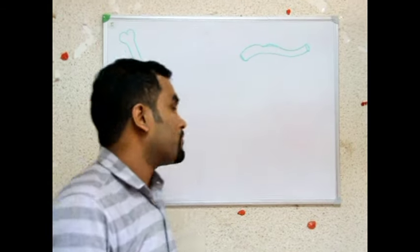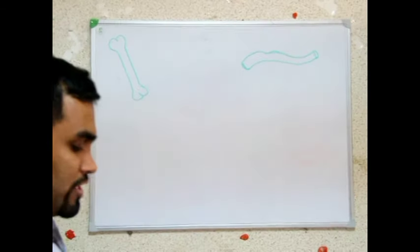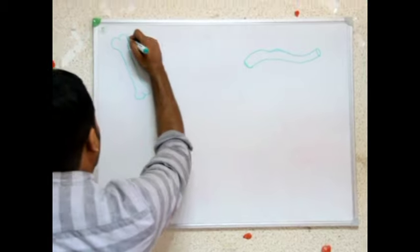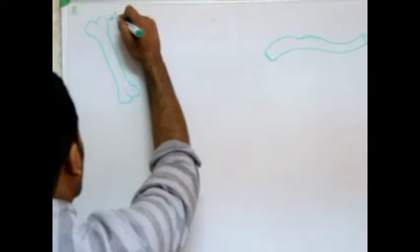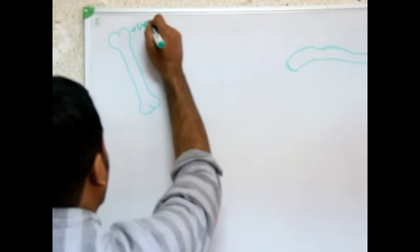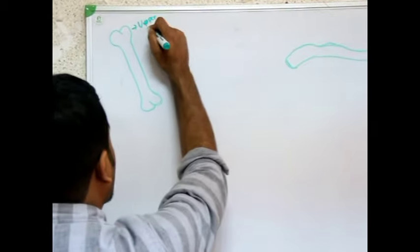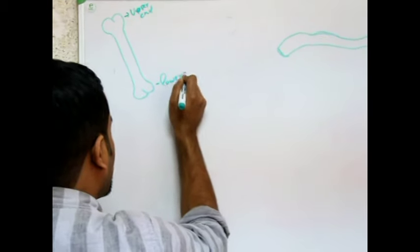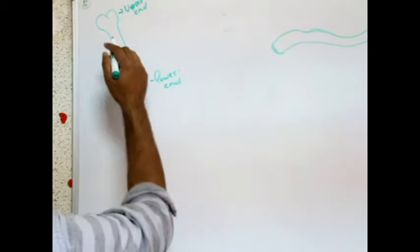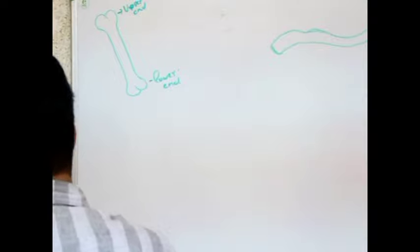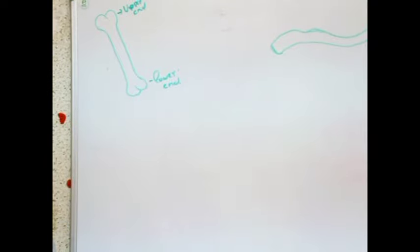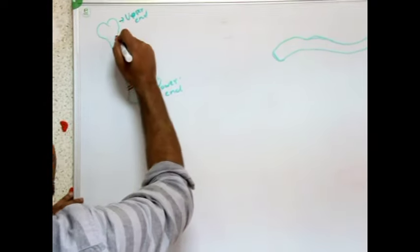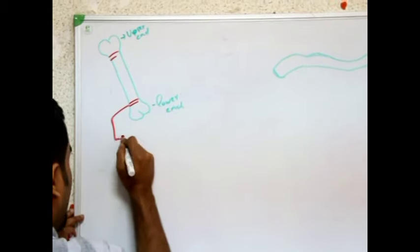We are continuing a short introduction of bone. This is the structure of bone. We have upper end here and lower end — the structure of a small bone. This region is known as the epiphyseal plate.